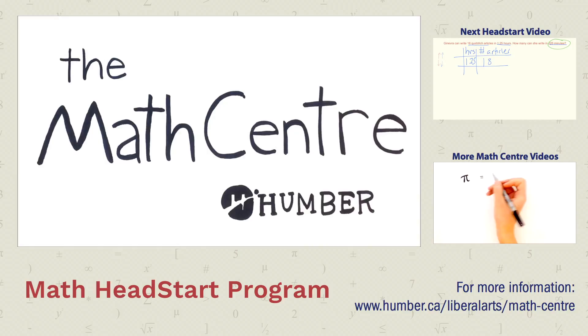The number pi is equal to 3.141592653 and so on. It represents the ratio of any circle circumference to its diameter. But why is the symbol pi used?